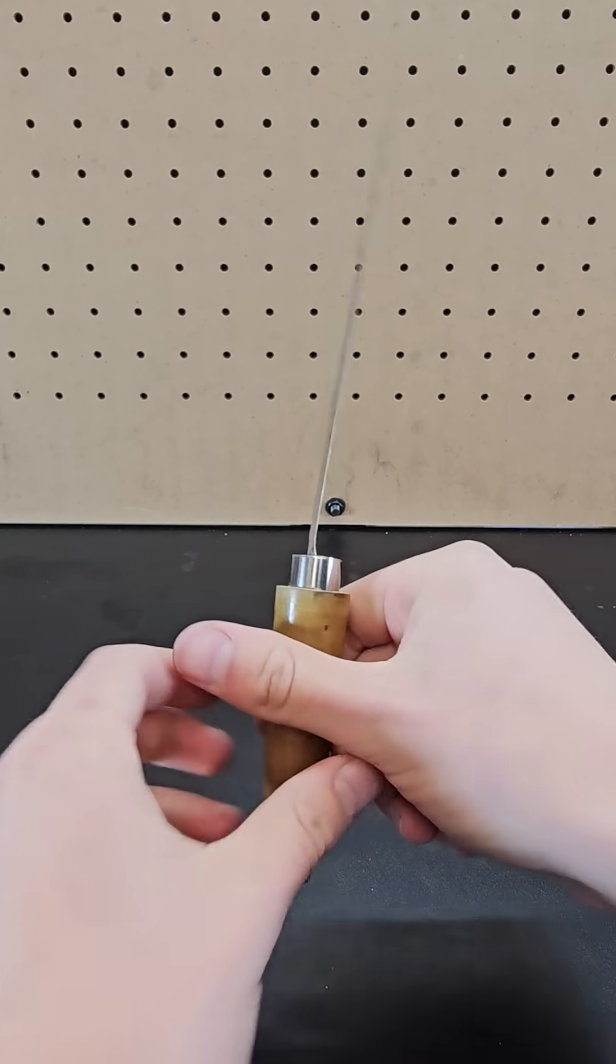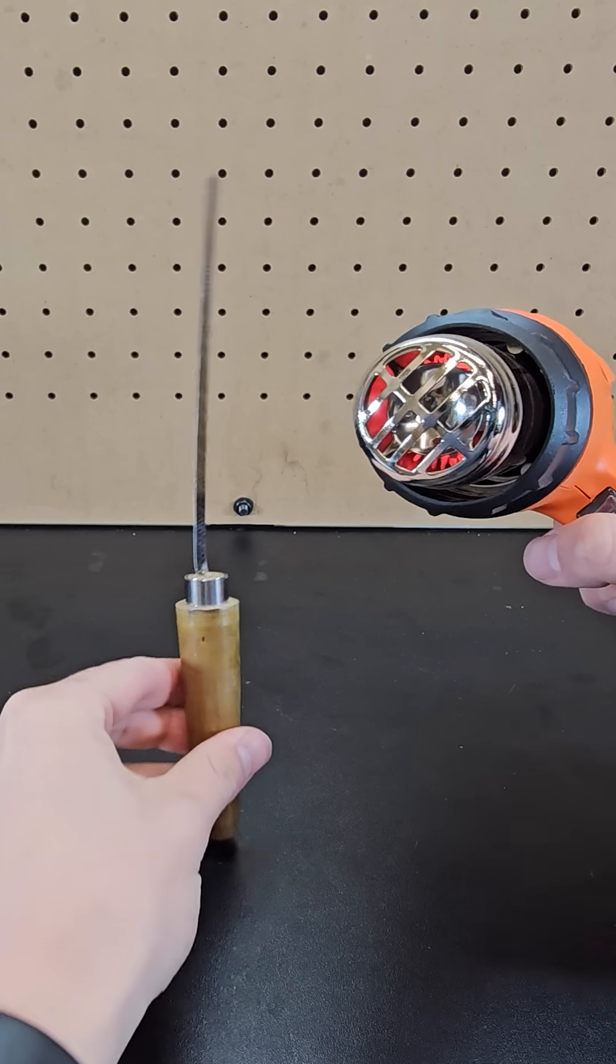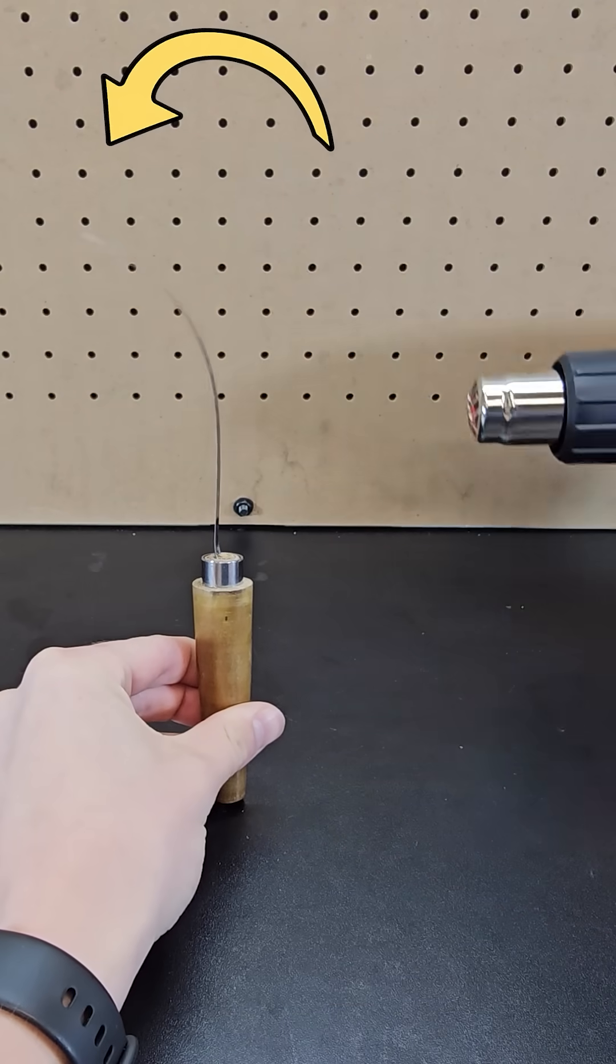This is a bimetallic strip with a handle. That means it's two thin pieces of different metal alloys attached together. These metal alloys expand different amounts when heated. So if you apply heat to this strip, the object will bend to the left.